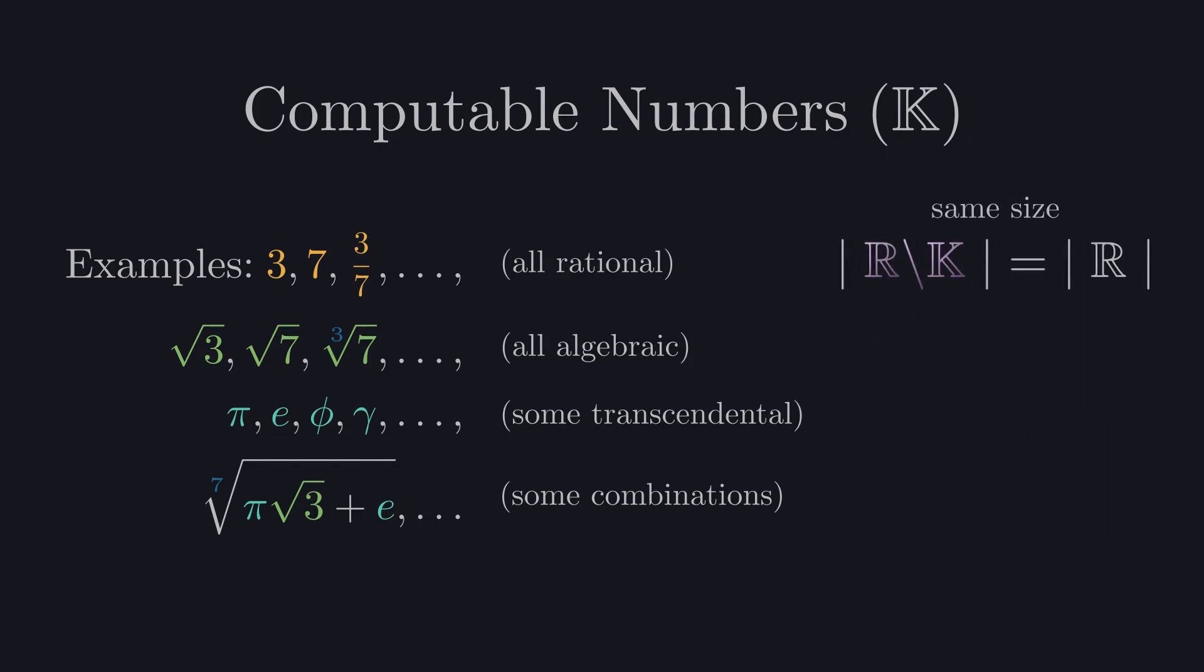When you take out all computable numbers out of the reals, you haven't really touched them at all. The cheese would have survived all of that completely intact, because the size of the reals without computable numbers is the same as the size of the whole set.